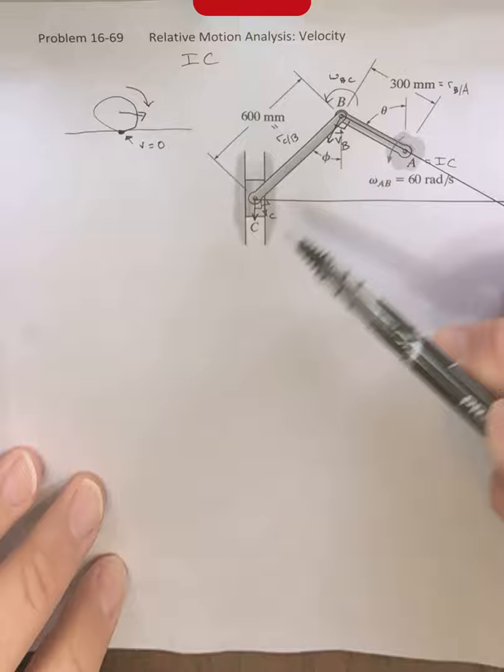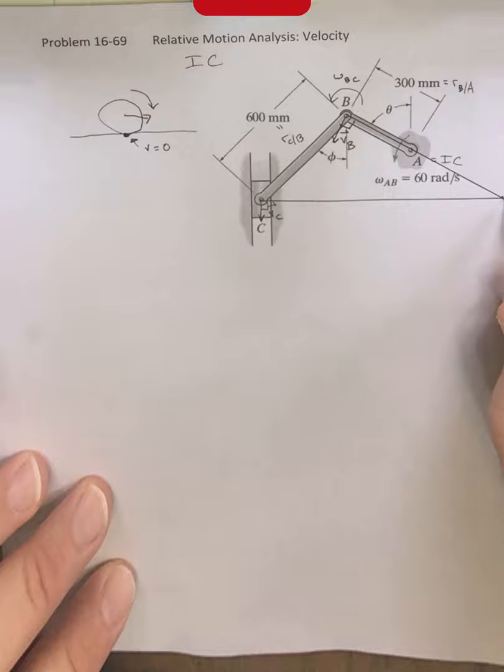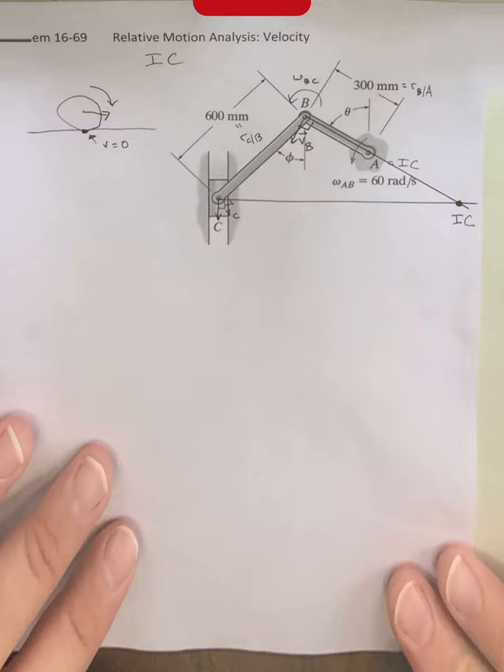We started with our two velocity vectors. We extended these lines. This point out here then represents our instantaneous center of zero velocity for this problem. We have, I just did it without even knowing.